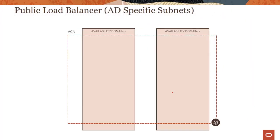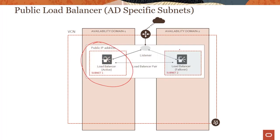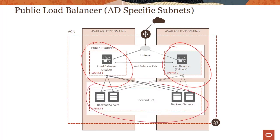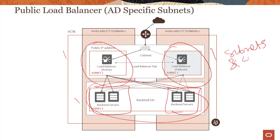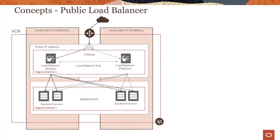In the alternative design using AD-specific subnets, the load balancer runs in a subnet in AD1 and the failover runs in a separate subnet in AD2, with backends in a regional subnet — giving three subnets total. If all subnets were AD-specific, you would have four subnets. With regional subnets you only need two. Depending on your application design, you can use AD-specific or regional subnets, but for a public load balancer it is recommended to use a regional subnet.